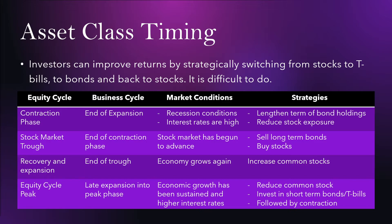The stock market trough is the end of the contraction phase — the bottom of the market. This is when you sell those long-term bonds and buy stocks, since they will benefit from the recovery. For example, during COVID-19 when the market was at the bottom, that's when you would want to put stocks into your portfolio. During the recovery and expansion phase, when the economy starts growing again, you simply increase your common stock since they will benefit.